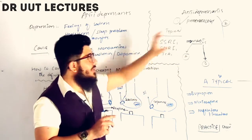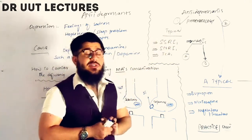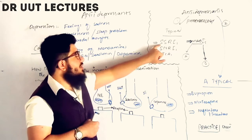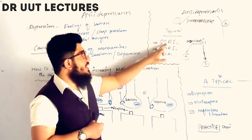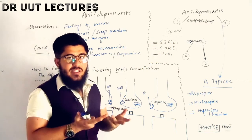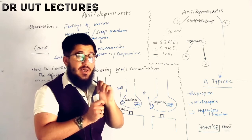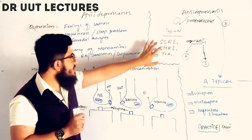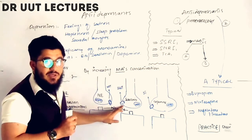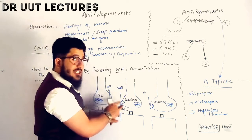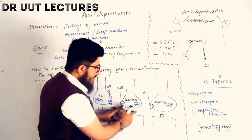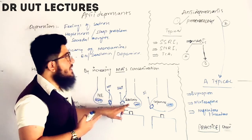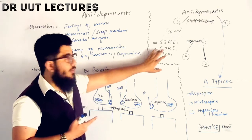Starting with typical antidepressants: the first class is SSRIs — Selective Serotonin Reuptake Inhibitors. As the name indicates, they selectively block the serotonin transporter. When this transporter is blocked, the serotonin released into the synapse will not be reuptaken, thereby increasing serotonin concentration in the synapse and countering depression.